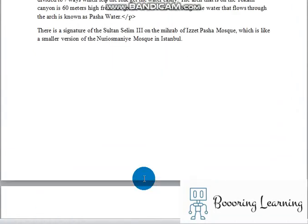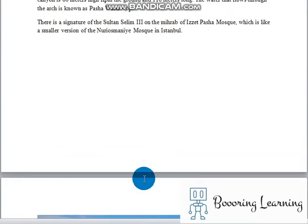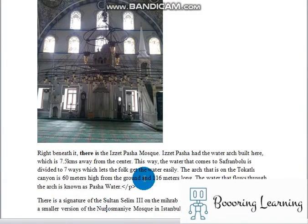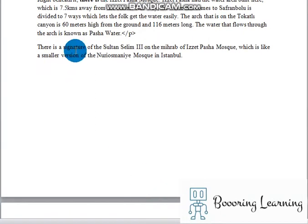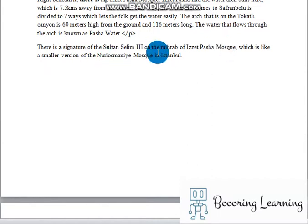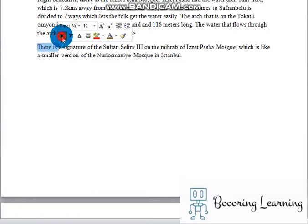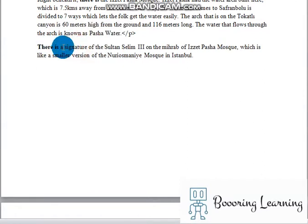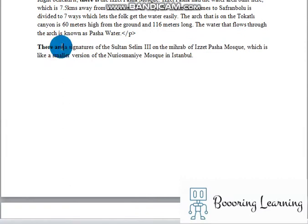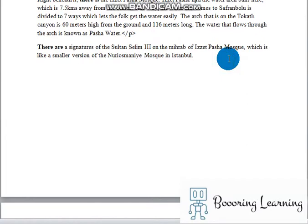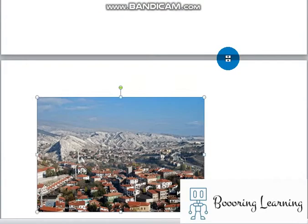There is a signature of Sultan Selim III on the mihrab of Vizal Pasha Mosque, which is like a smaller version of the Nuruosmaniye Mosque in Istanbul. Let's emphasize that: there is one signature — as you see, it's not plural. If we wrote there is a signatures, we must change it to there are. Let's look at other samples.